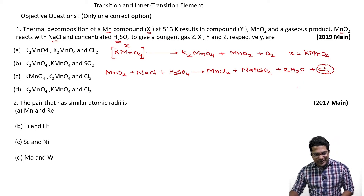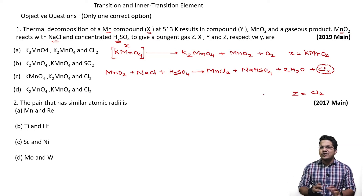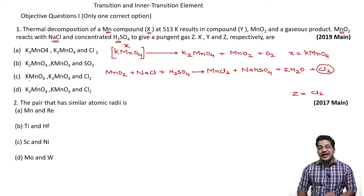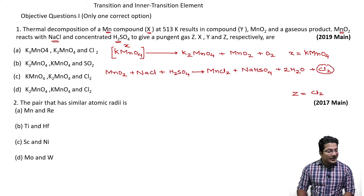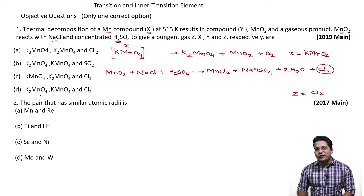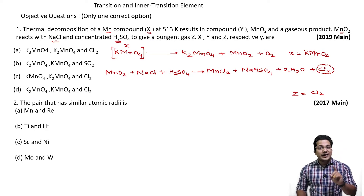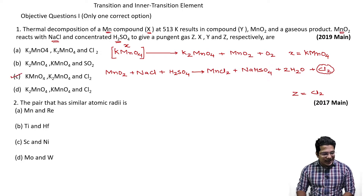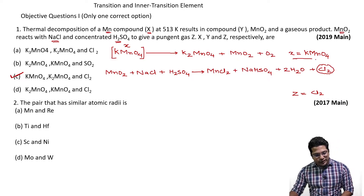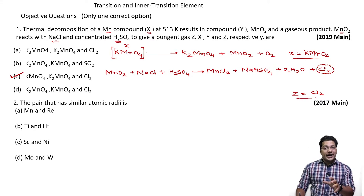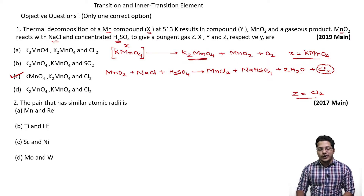The pungent gas Z is chlorine. Checking the options — A gives K₃MnO₄ which is incorrect. Option D gives K₂MnO₄ for X, which is wrong. Since X is KMnO₄ and Z is chlorine, the correct answer is option C. Y is K₂MnO₄, confirming option C.